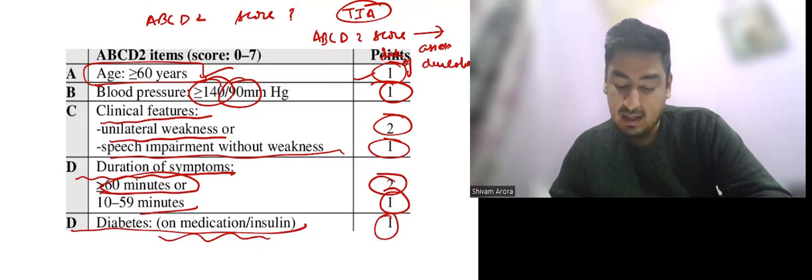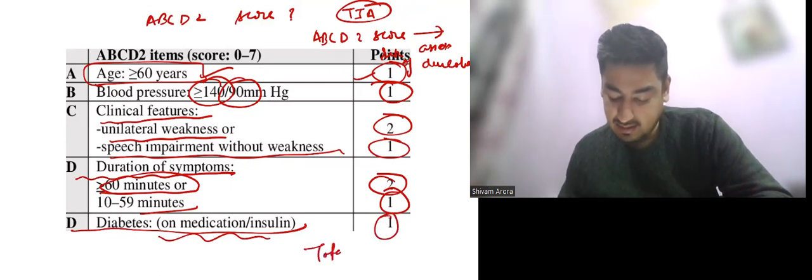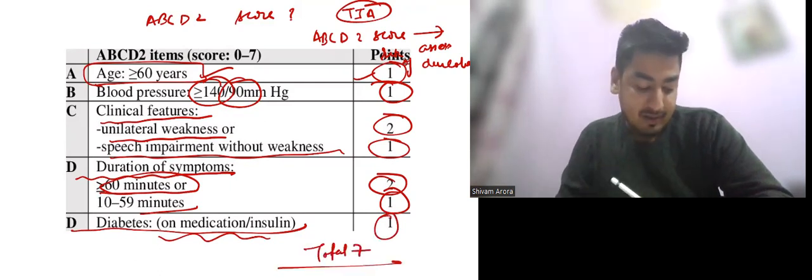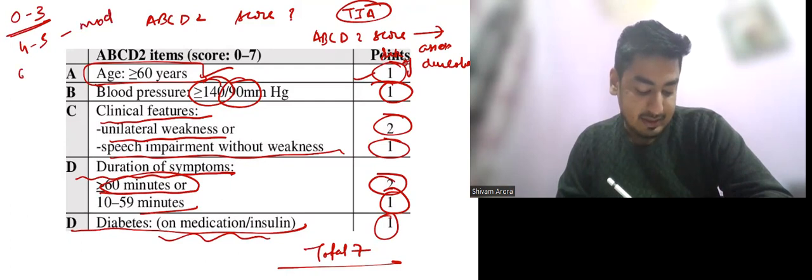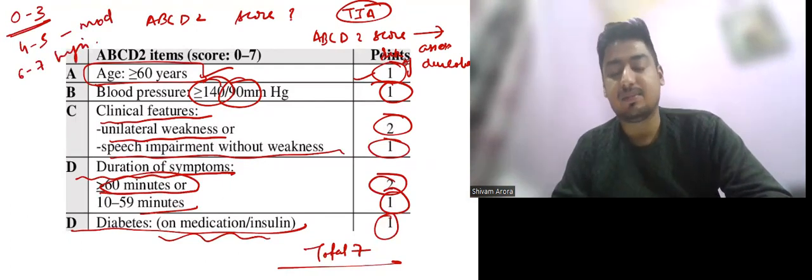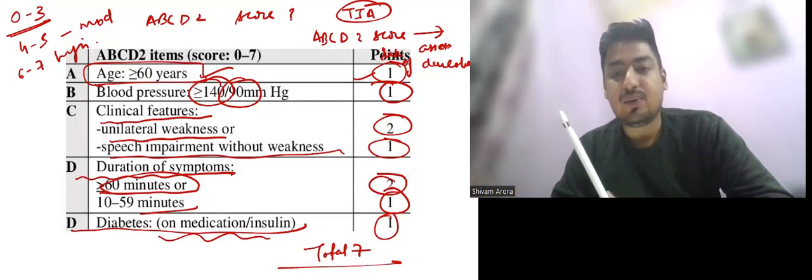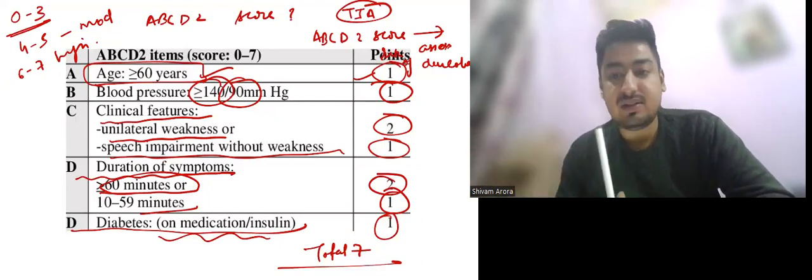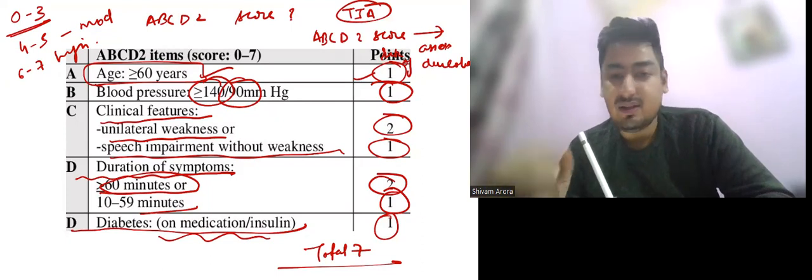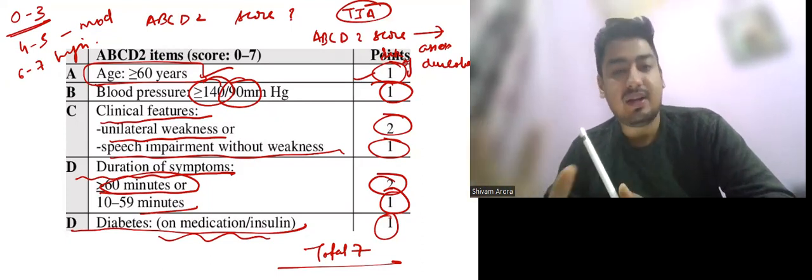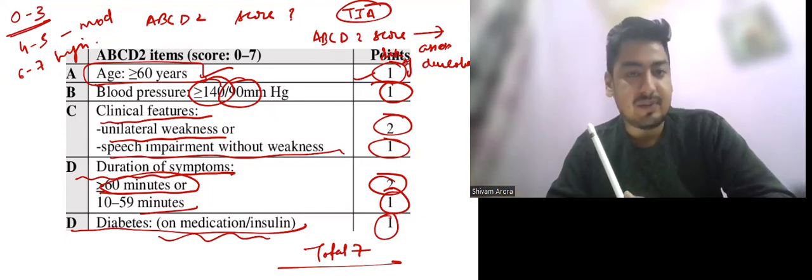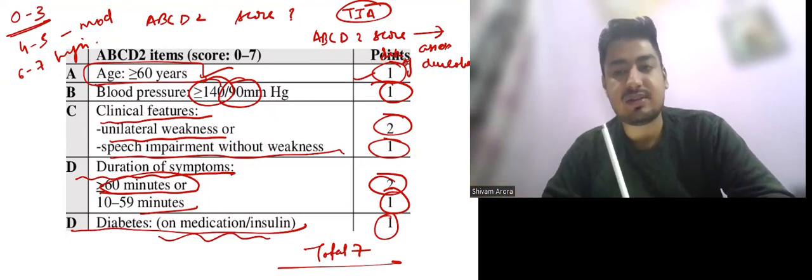The total score here is 7, with 0 to 3 for low risk, 4 to 5 moderate risk, and 6 to 7 high risk of developing stroke. All the best. Try to remember these tables because these are very important and definitely questions are asked, were asked, and will be asked on these topics.